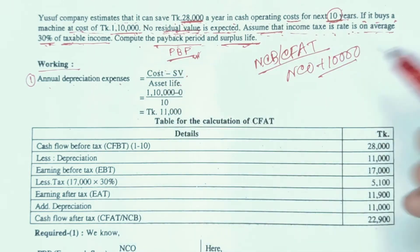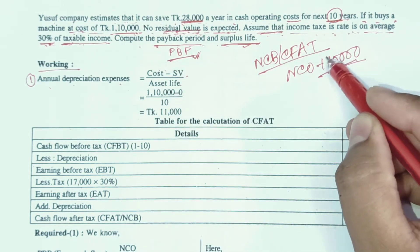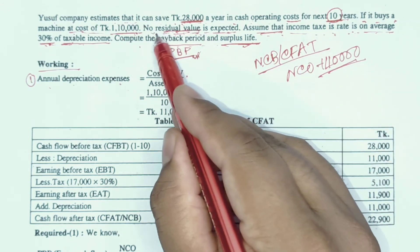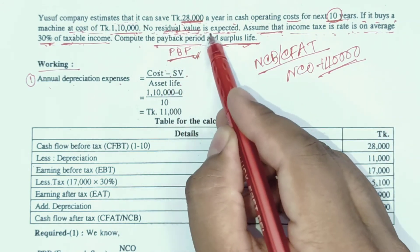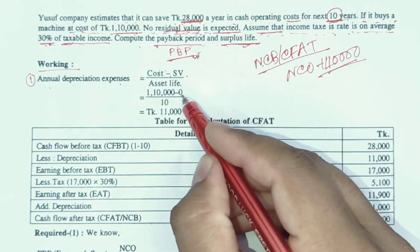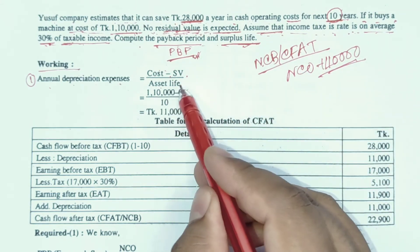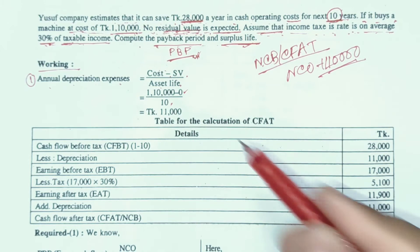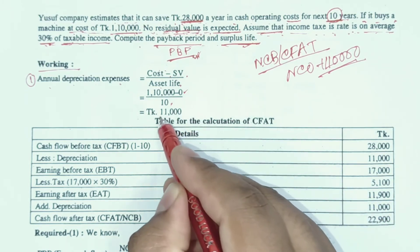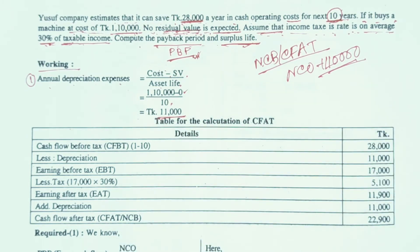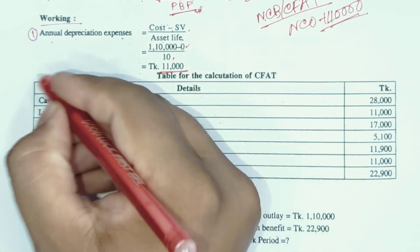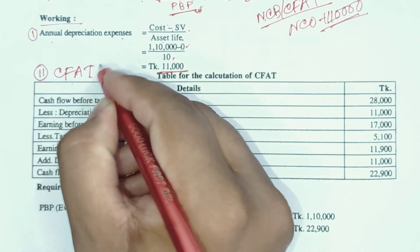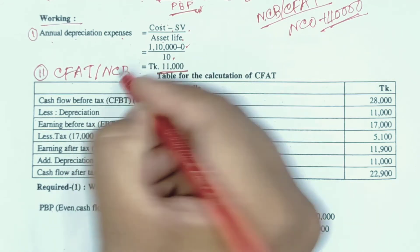Cost compared: machine cost is 10,000. No residual value. Asset life of the machine is 10 years. Working number 2: CFAT or NCB — Net Cash Benefits. Here we calculate the net cash benefits after tax for the project.